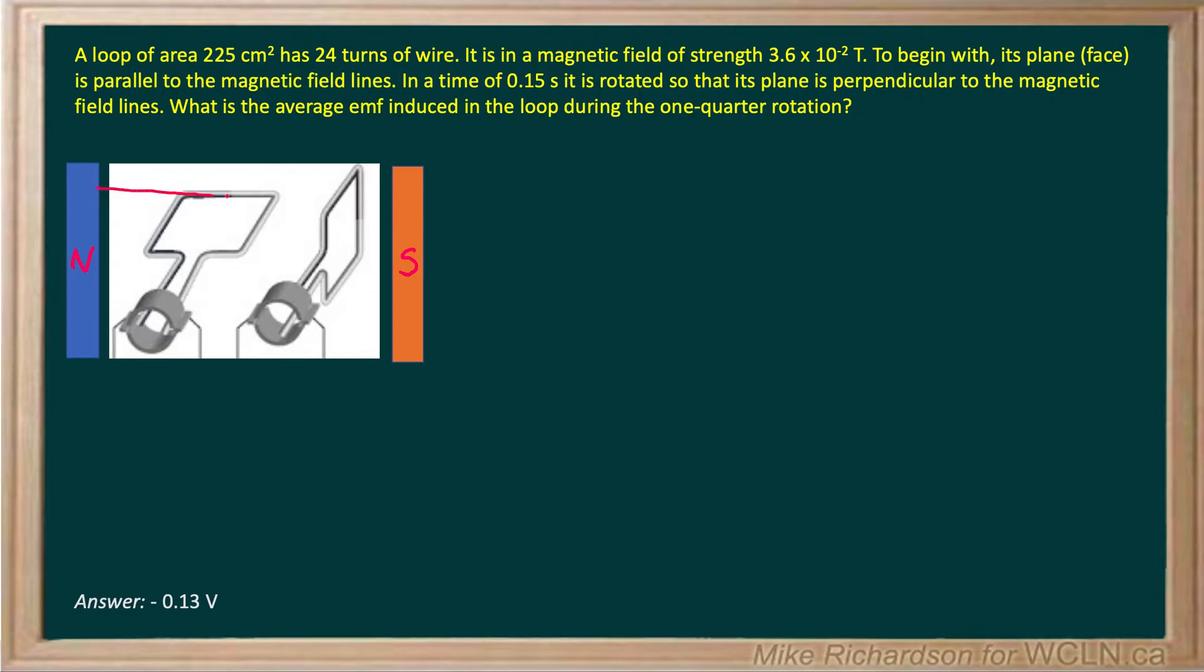In this example, the way I've drawn it, my field lines always go from north to south, straight across from left to right. When the initial plane of that loop is parallel to these field lines, it's not capturing any field lines. And if it's not capturing any field lines, the flux is zero.